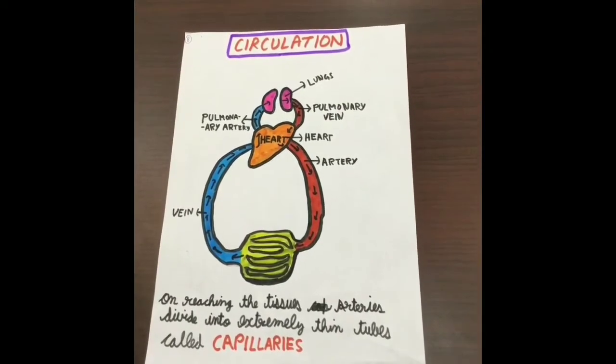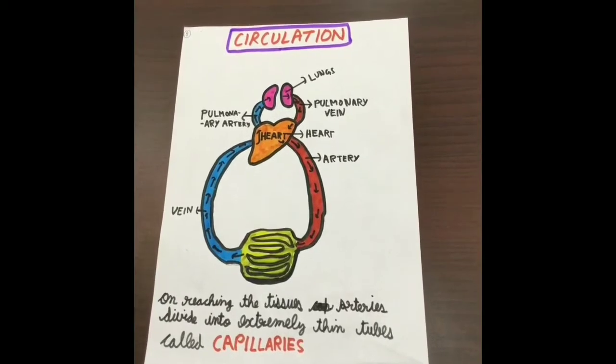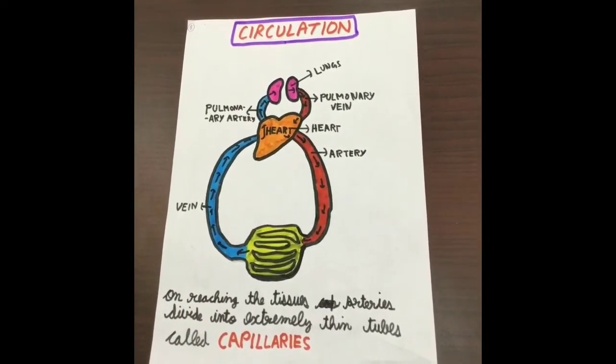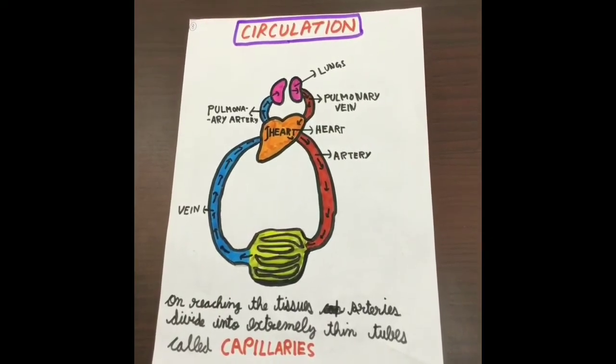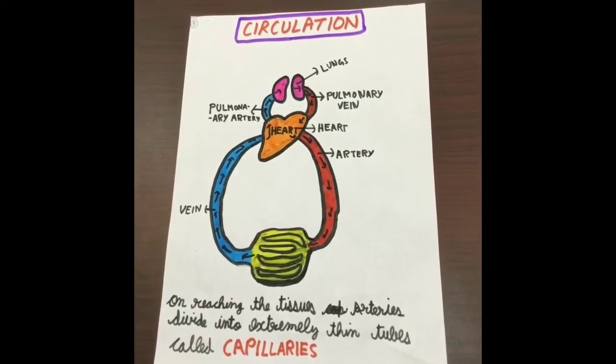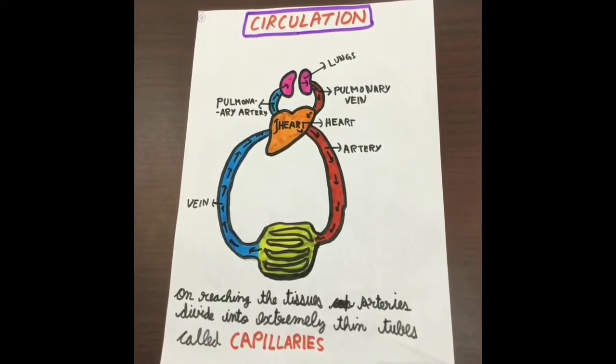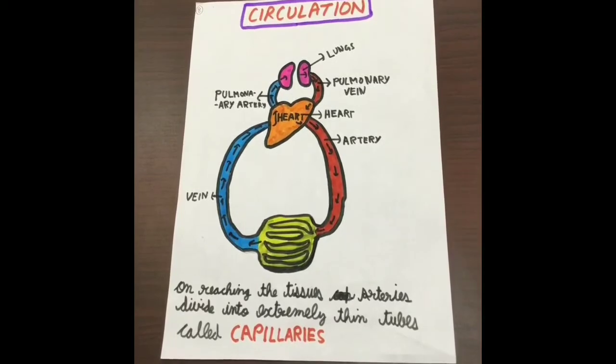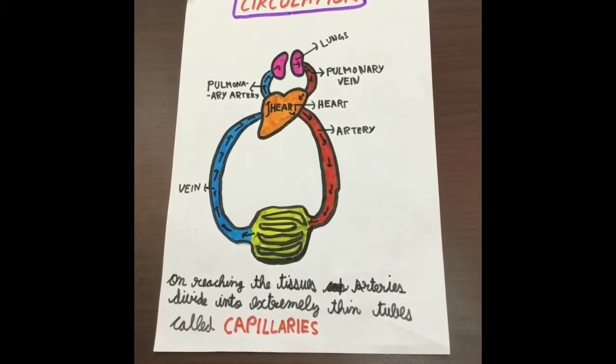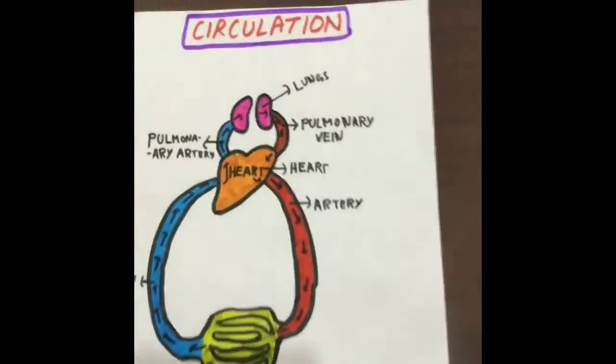Blood, blood vessels, and the heart form the circulatory system, which transports various things like oxygen, carbon dioxide, wastes, etc. Here is a diagram to help you learn about the circulation of blood. The heart pumps blood into an artery and, on reaching the tissues, the arteries divide into extremely thin tubes called capillaries. The capillaries join up to form veins. The vein brings the blood back to the heart. It is pumped into the pulmonary artery for removal of carbon dioxide by the lungs, and the pulmonary vein brings the oxygenated blood back to the heart, and the cycle goes on.